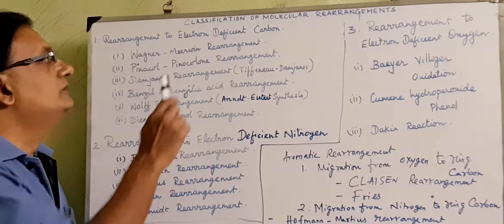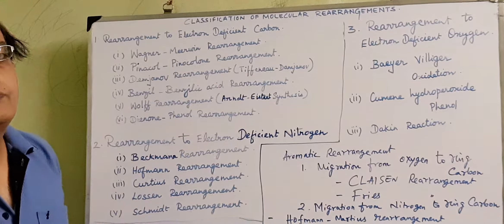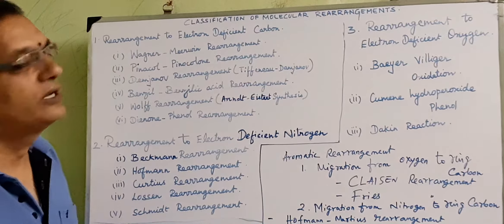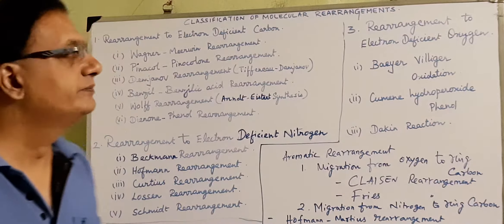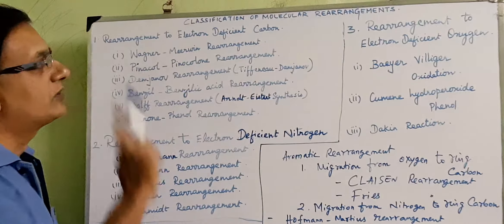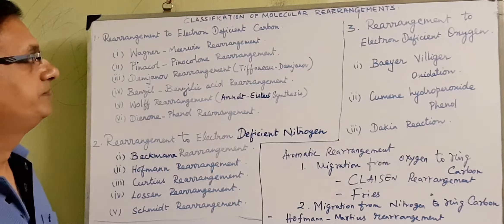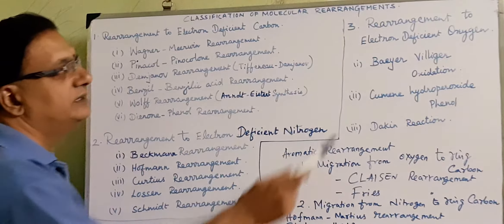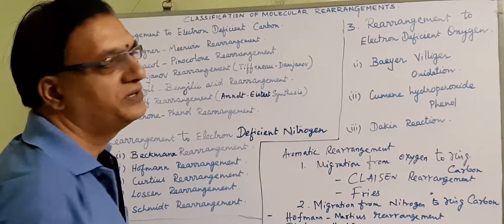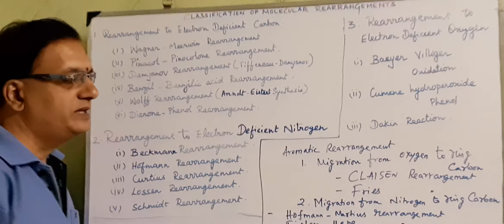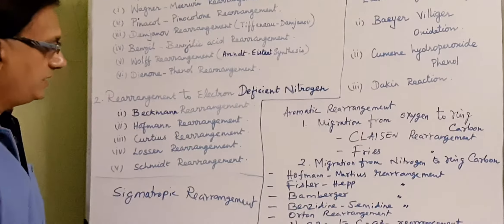In this video we will have a classification of molecular rearrangement. Number one: rearrangement to electron-deficient carbon, and rearrangement to electron-deficient nitrogen, rearrangement to electron-deficient oxygen, followed by aromatic rearrangement and special cases of sigmatropic rearrangements.